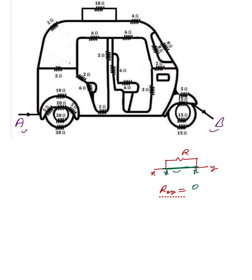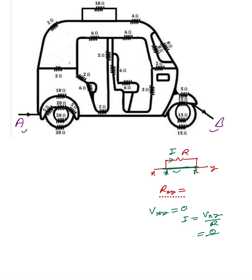The voltage drop between X and Y is zero. So V of XY equals zero — the voltage drop between XY is zero. If anyone asks about the current in this path, current I is written as V_XY divided by R. Since V_XY is zero, the current is zero by R, which equals zero. Zero current means no current flows in that resistance.